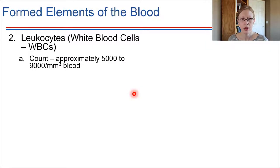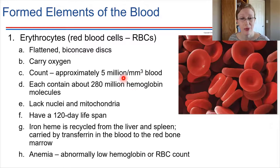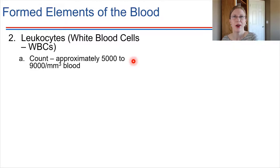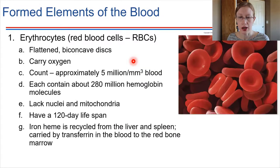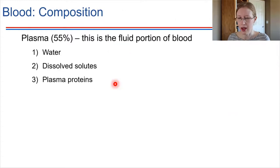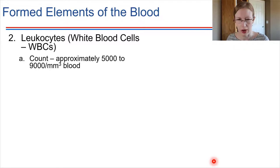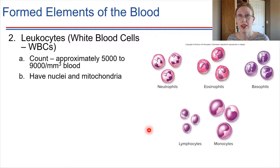Now let's look at leukocytes — the white blood cells. We don't have nearly as many of these. Red blood cells number 5 million per millimeter cubed, compared to about 5,000 for white blood cells. That's why when we centrifuge blood, we see a thick layer of red blood cells but just a tiny layer of white blood cells. White blood cells do have nuclei and mitochondria. Looking at the nucleus of a leukocyte can be very informative — it can help us figure out which type of leukocyte we're dealing with.